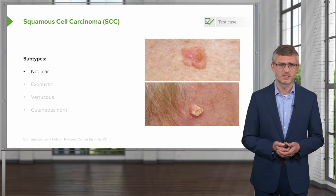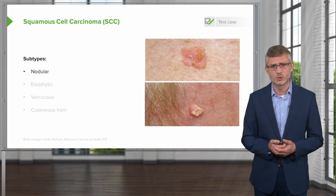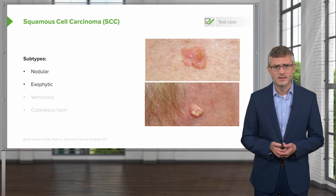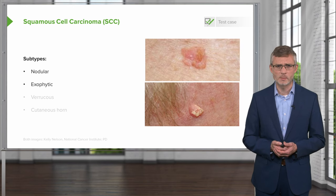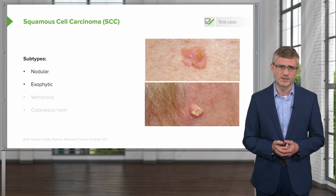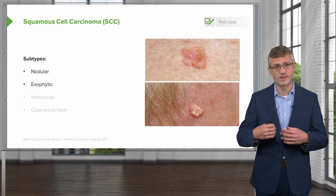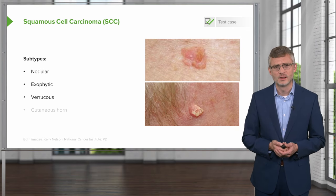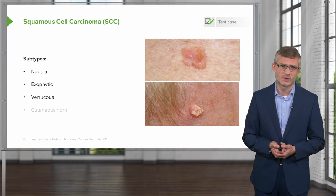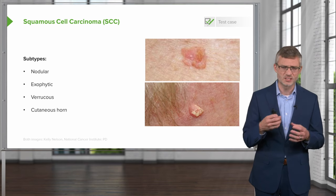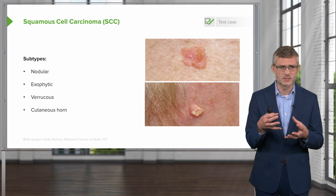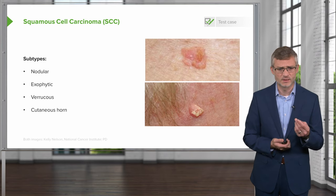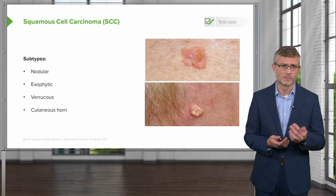The subtypes include the nodular type, shown in the top right, and the exophytic type — exophytic means growing out of the skin — shown at the bottom. There's also the verrucous type, which is not shown, and then a cutaneous horn, which is a hyperkeratinized plug that can grow out of the lesion. It's very firm and very hard.